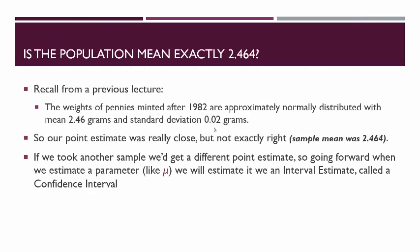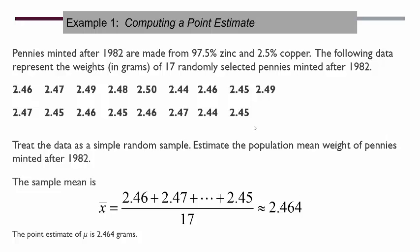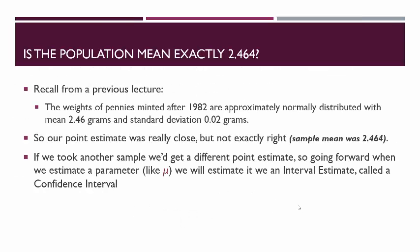Recall from a previous lecture on sampling distributions: the weight of pennies minted after 1982 are approximately normally distributed, and we actually know the value of mu — it's 2.46 grams with a standard deviation of 0.02 grams. So our point estimate of 2.464 was really close but not exactly right; our sample mean just overestimated the real mean a little bit. We would expect that with only 17 pennies, and if we took another sample, we'd get a different point estimate — a different sample mean.